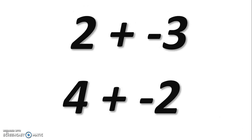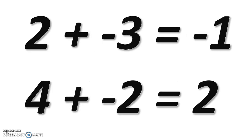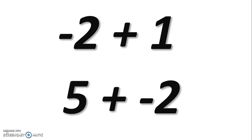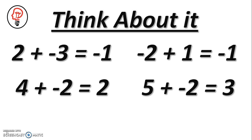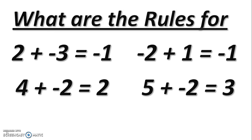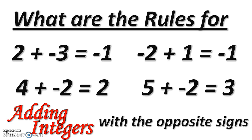We've done several problems modeling how to add integers with opposite signs. Now try these two on your own: negative two plus one, and five plus negative two. Then we're going to think about what the rules are when adding integers with opposite signs.